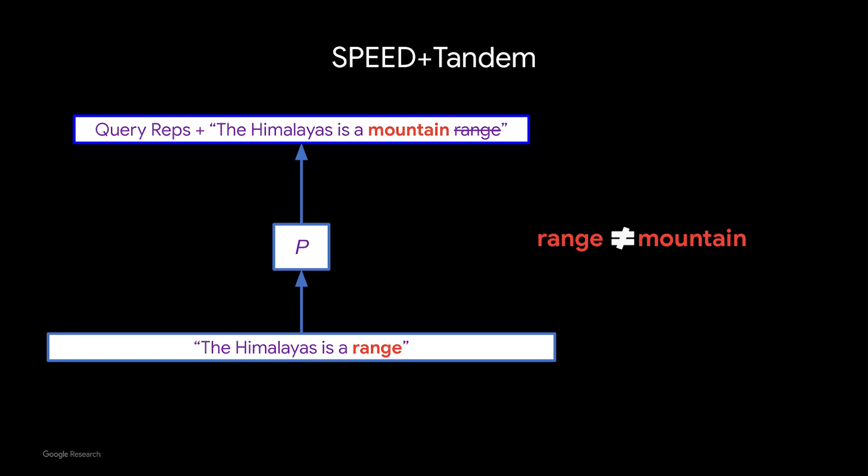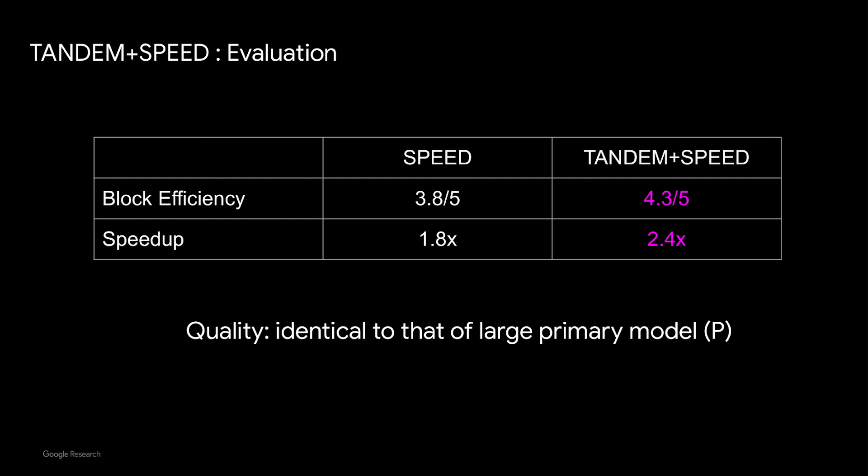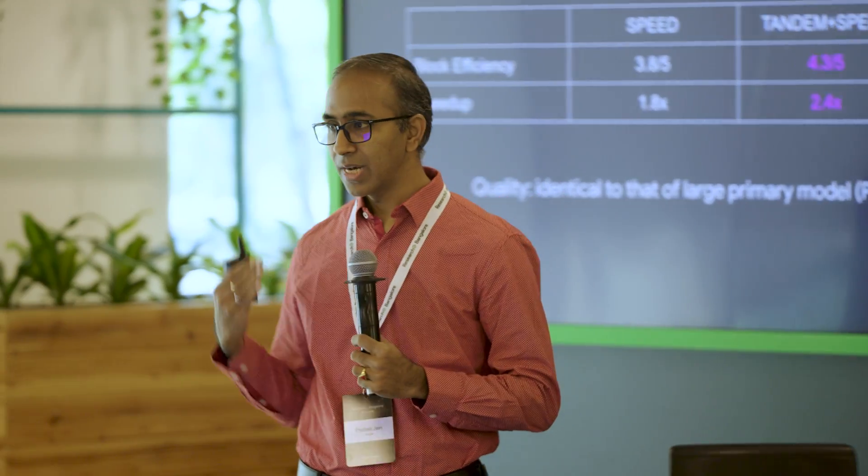Now the main game is latency. If the secondary model is able to propose or guess what the primary model is going to generate for the next few steps, then we will have very good latency reduction. By using the secondary model of Tandem, we are able to guess the primary model's output almost 4.3 times out of 5, which ensures a speedup of almost 2.4x over the basic primary model, while ensuring that the output is exactly identical to that of the large primary model.